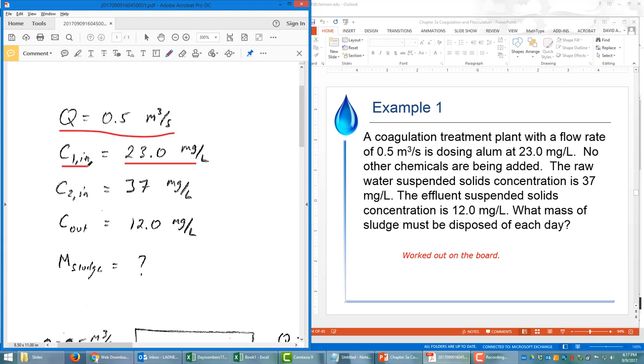Dosing alum at 23 milligrams per liter, we're going to call that C1N. No other chemicals are being added, but the raw water suspended solids does have a concentration of 37 milligrams per liter, we'll call that C2N, and the effluent suspended solids concentration is 12 milligrams per liter, we'll call that Cout.